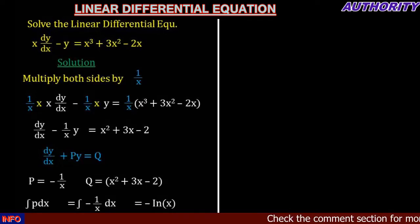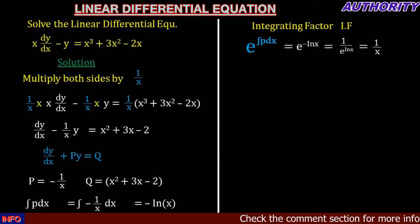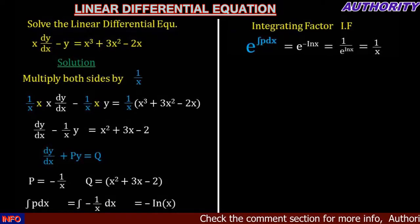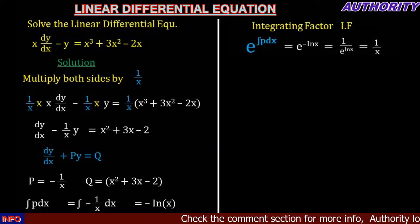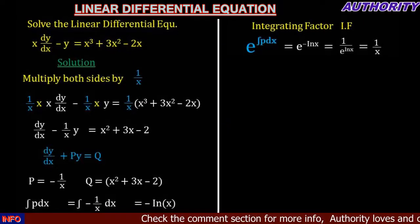Now let's find the integrating factor. The integrating factor is e raised to the power of the integral of P dx, which we found to be negative ln(x). So we have e raised to the power of negative ln(x). Because of the negative, this can be written as 1 over e raised to ln(x), which equals 1 over x. So the integrating factor is 1 over x.